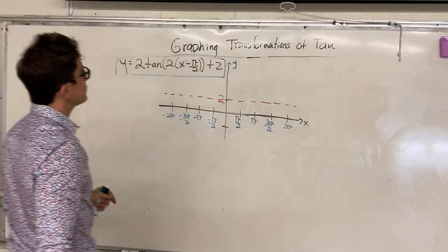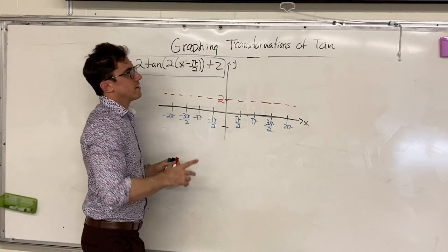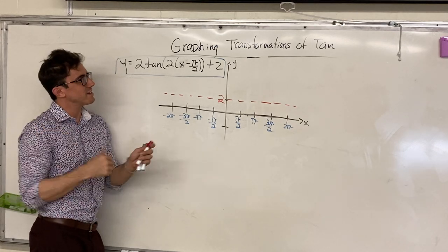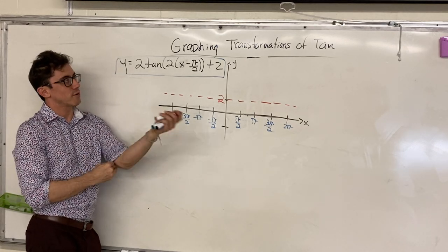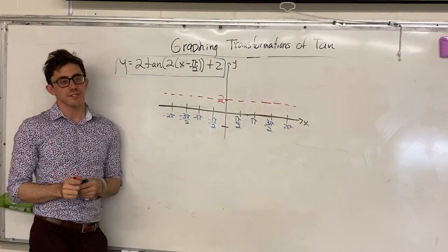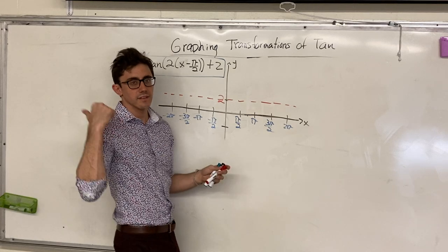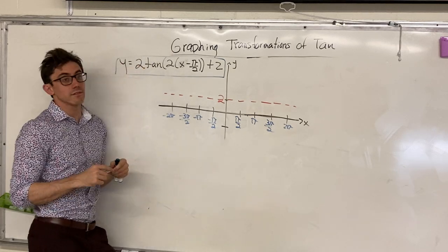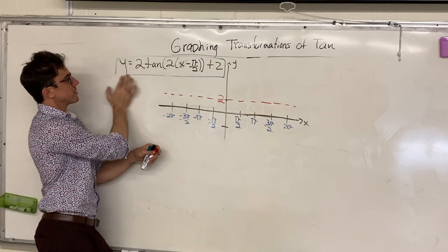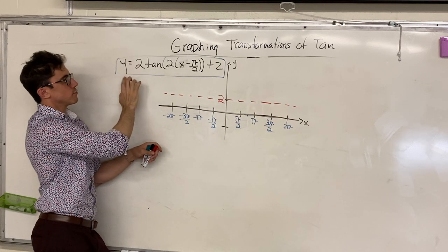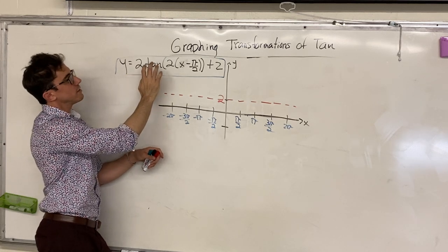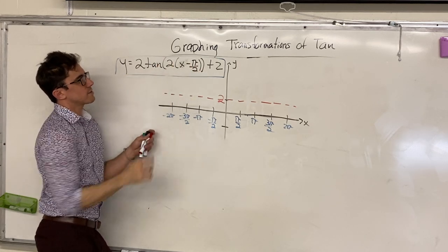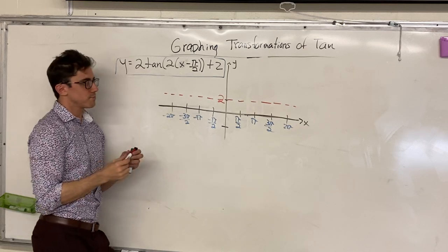Good afternoon, everyone. Today we're going to do a video following the previous video that we just made for graphing transformations of a tan function — a continuation of graphing the general tan function. Today we're going to look at the function y is equal to 2 tan of bracket 2 bracket x minus π over 2, plus 2.